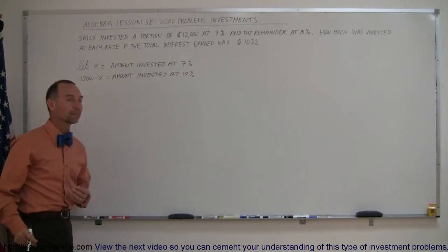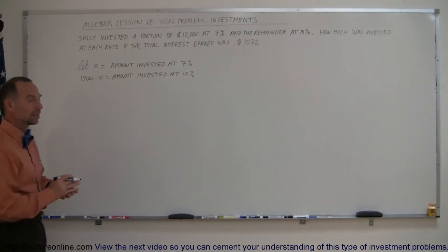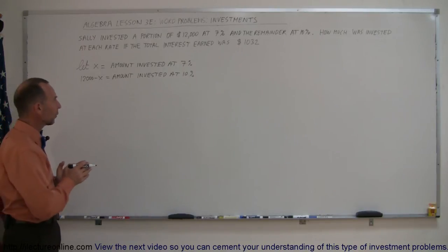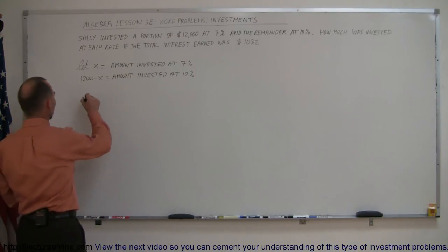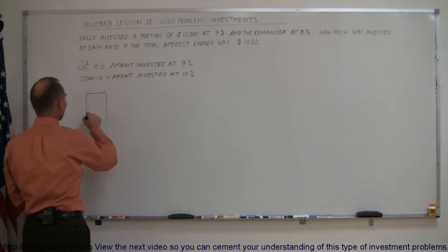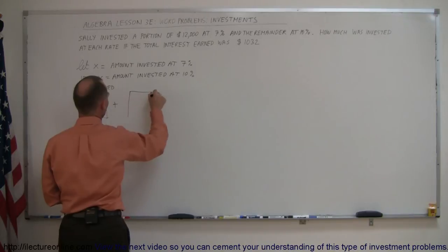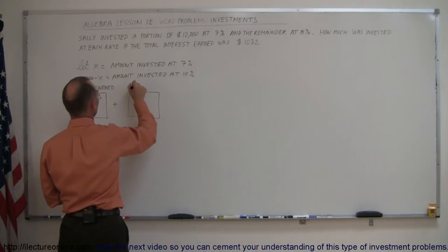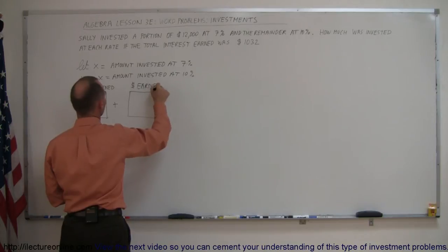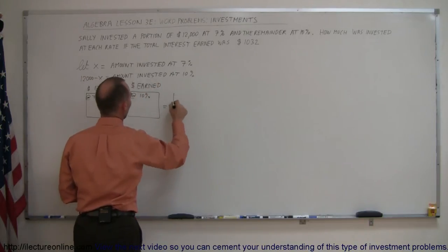Okay, now, how do we solve the problem? We need to come up with an equation. And the way you can set up the equation is to assume this, that the amount of money earned, the dollars earned at 7% plus the dollars earned at 10% must equal the total earned.